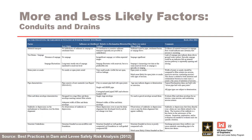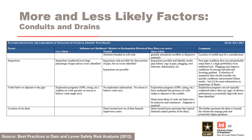Here are some more and less likely factors. This table from the best practices manual can be used to help assess the likelihood of open defects in conduits, pipes, culverts, or drains. It can be used as a starting point, but the RIS team must develop project-specific more and less likely factors to guide the subjective probability estimation. The factors in this portion of the table address material transport, presence of seepage, presence of open cracks or joints, pipe characteristics, filter and drain characteristics, sinkholes or depressions, and structure under-drains. Additional factors address inspections, voids below or adjacent to the pipe, and location of the toe drains.